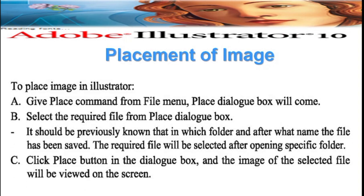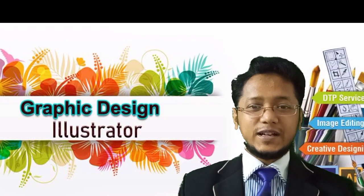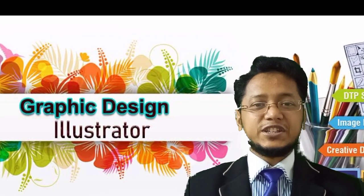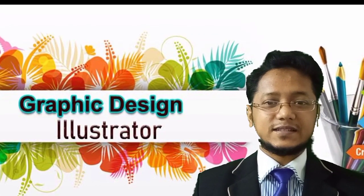Placement of image: to place an image in Illustrator, give the Place command from the File menu. The Place dialog box will open. Select the required file from the Place dialog box — you should know in which folder and under what name the file has been saved. After opening the specific folder and selecting the required file, click the Place button. The image of the selected file will be viewed on the screen. That's all for today's class — complete your homework and submit it to your subject teacher.